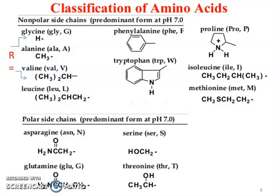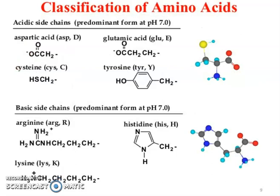Polar side chains predominant at pH 7: Asparagine (ASN), single letter code N; Serine (SER), code S; Glutamine (GLN), code Q; Threonine (THR), code T. These are examples of polar side chains. Acidic side chains include: Aspartic acid (ASP), code D; Glutamic acid (GLU), code E; Cysteine (CYS), code C; and Tyrosine (TYR), code Y.